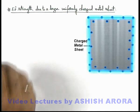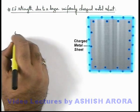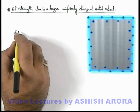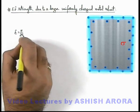We already discussed that due to a sheet, the electric field in front of it, because of the surface charge density sigma, is given by sigma by 2 epsilon not.